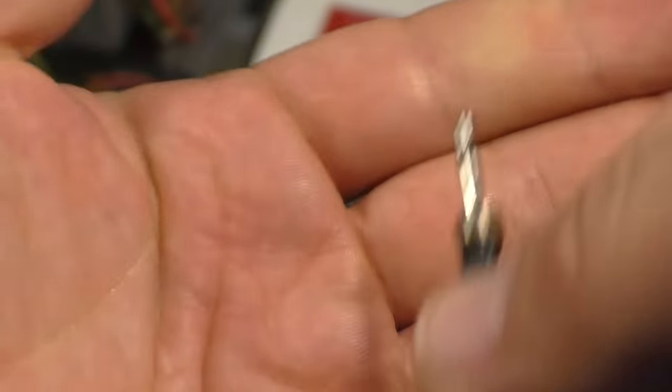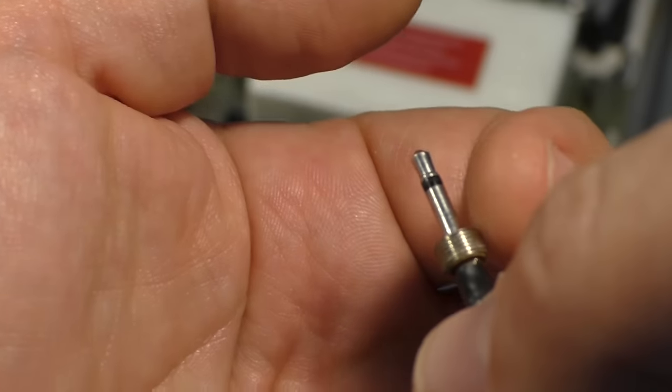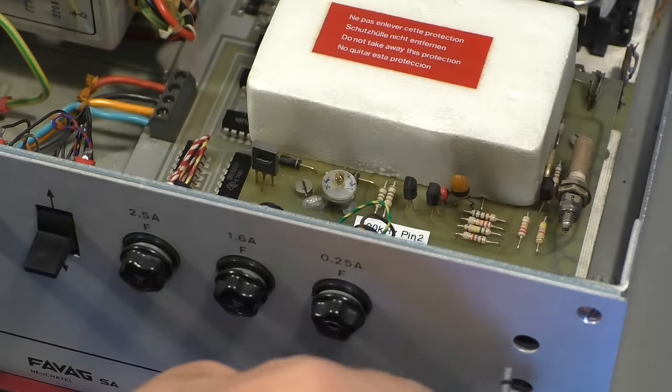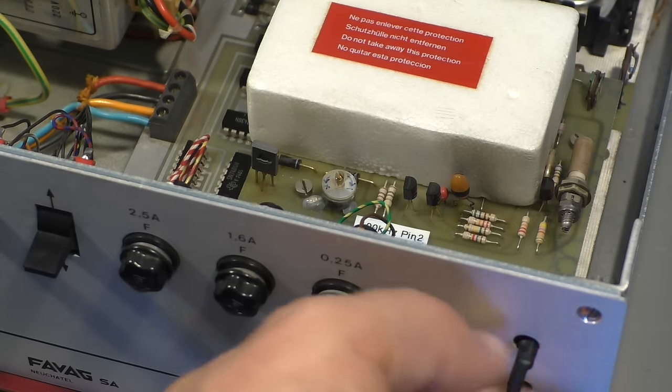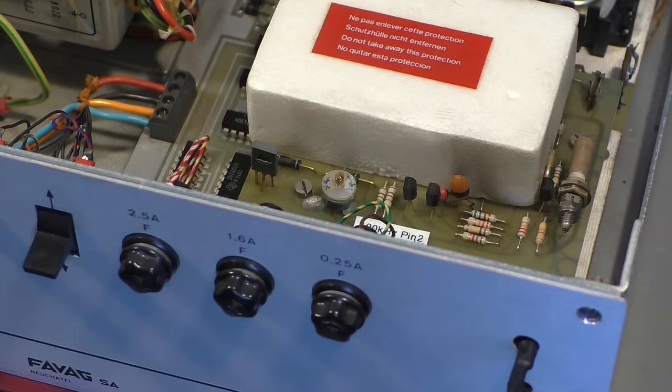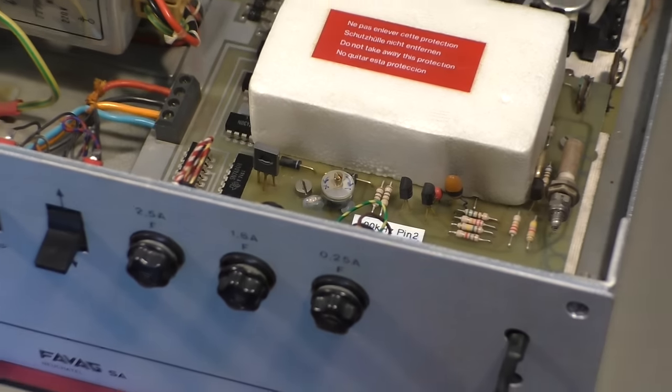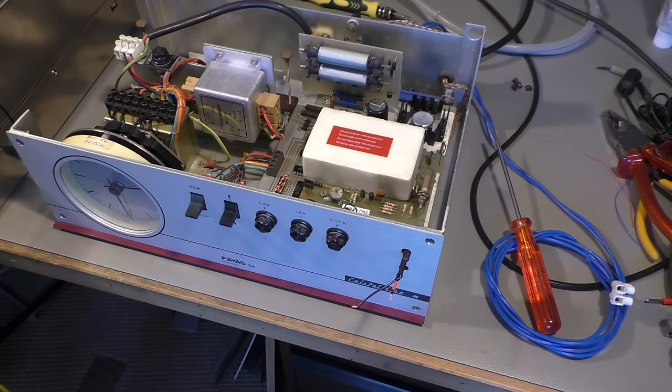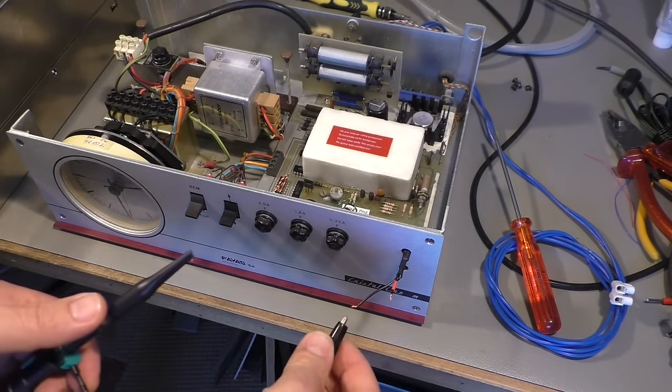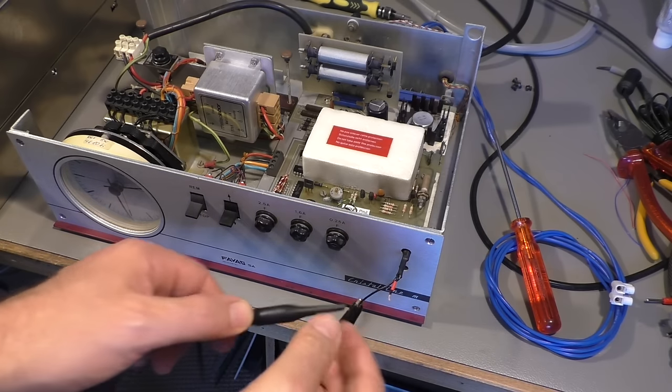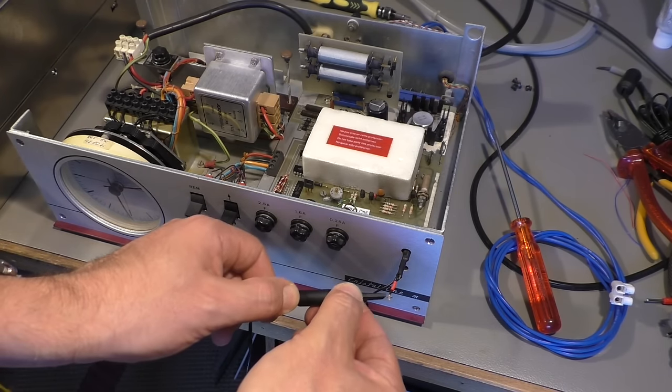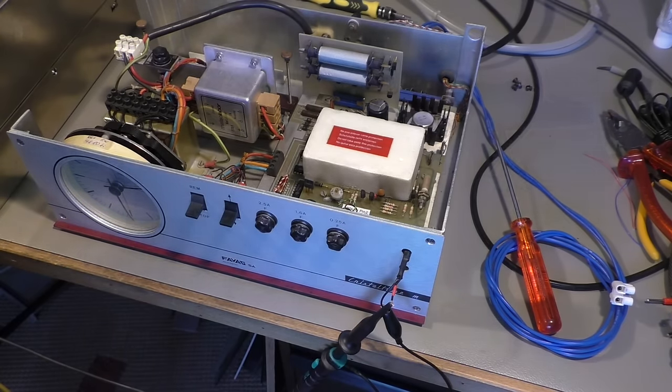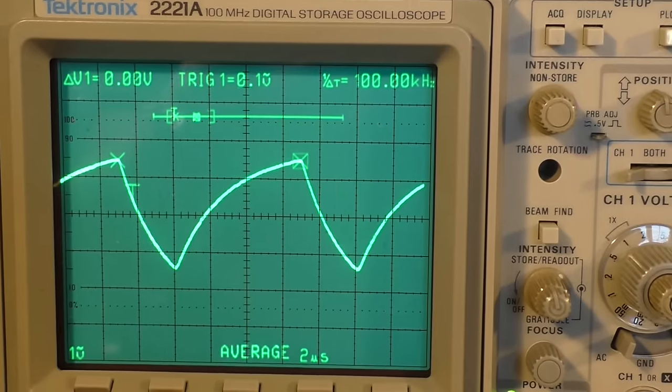The crazy thing here is the signal is on the sleeve and ground is on the tip. I don't know why they did it that way. It's a little bit crazy, but it was the 1970s and the 1970s have been crazy.